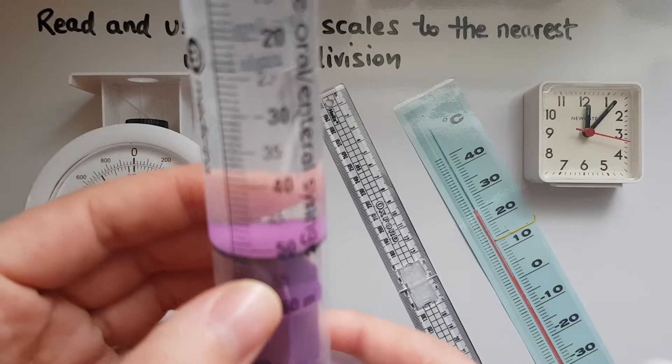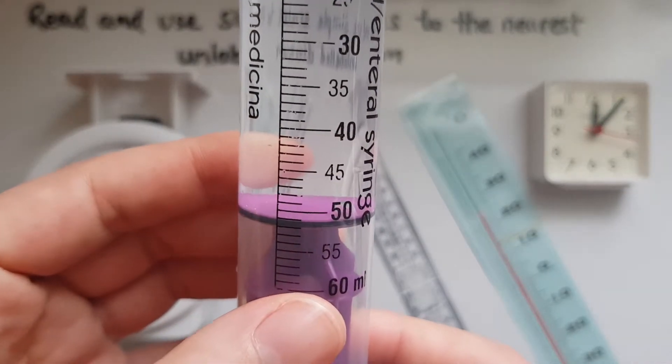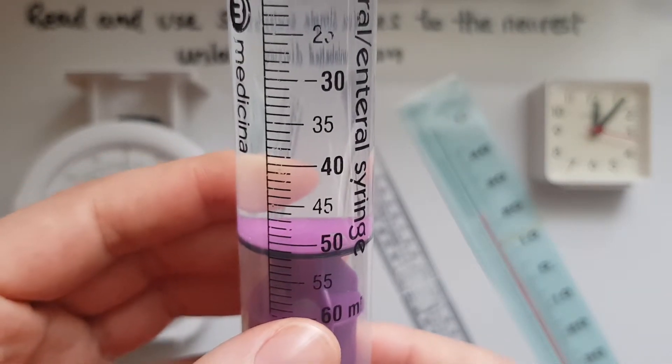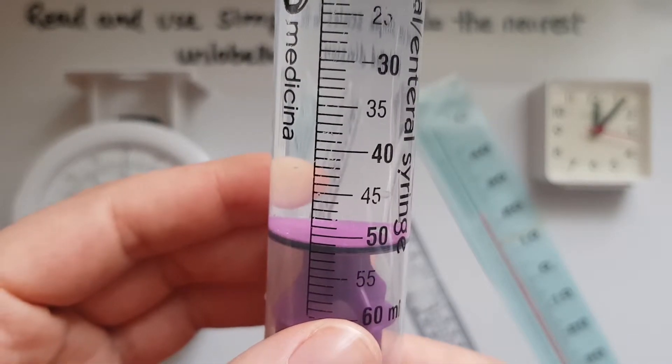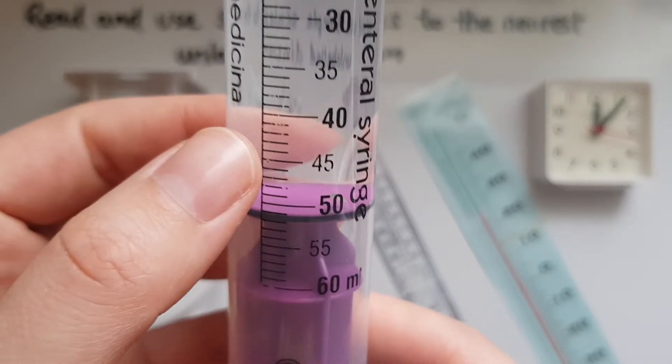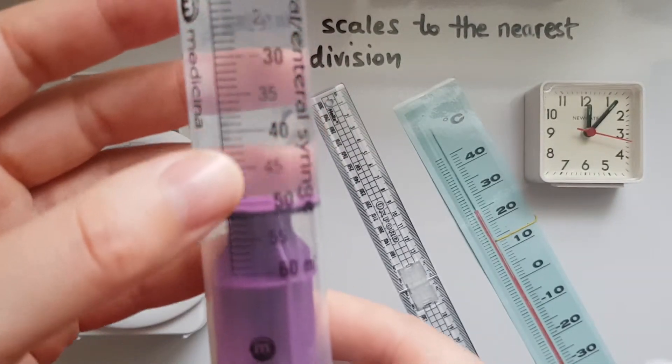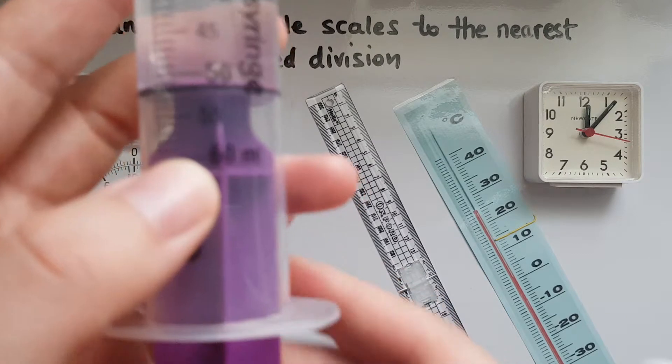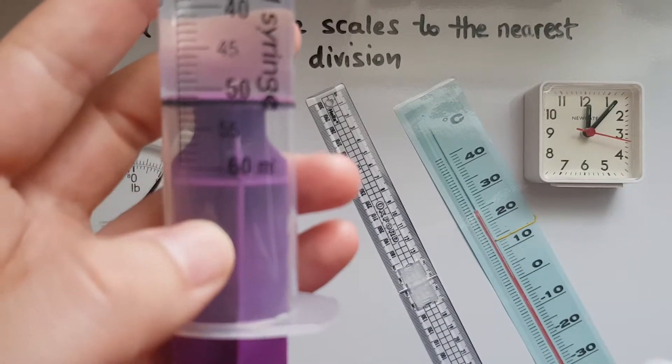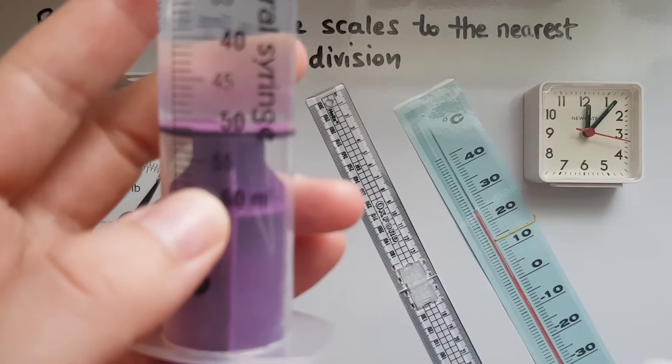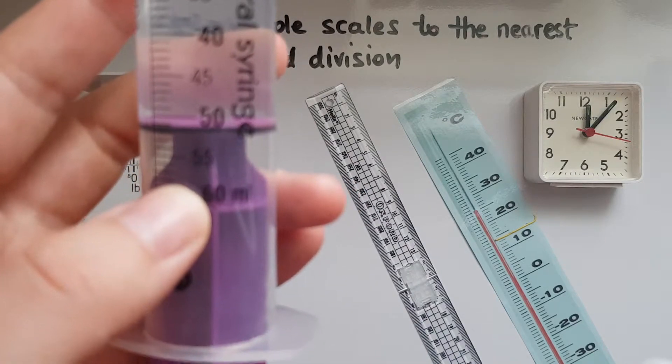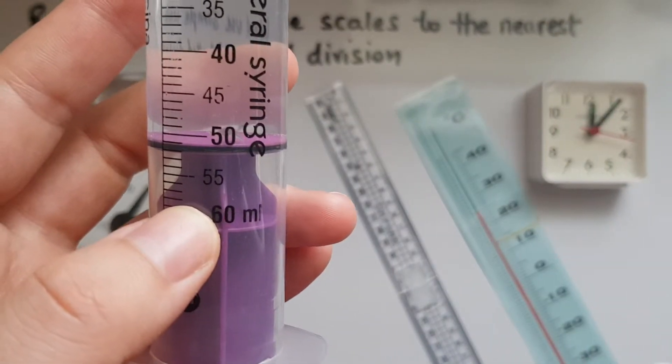Now I've got a syringe which we measure how much liquid in, measure the capacity. Right, so the capacity of this is 60 ml. How much water do I have at the moment?